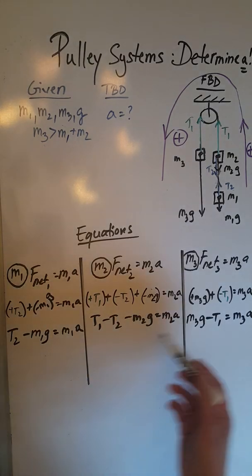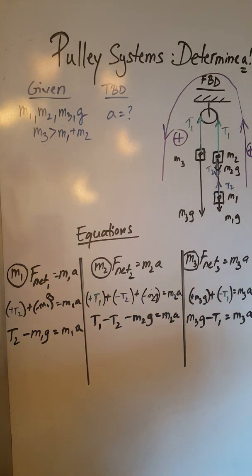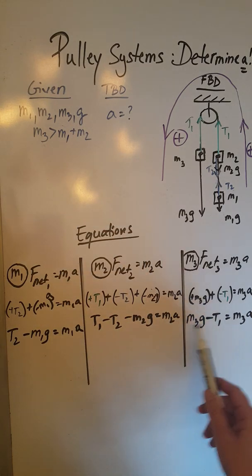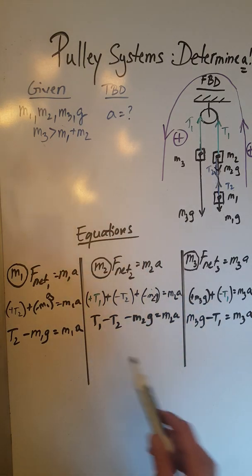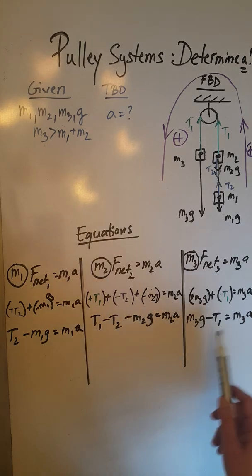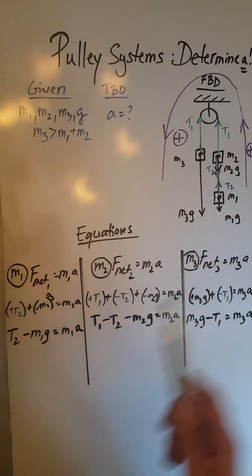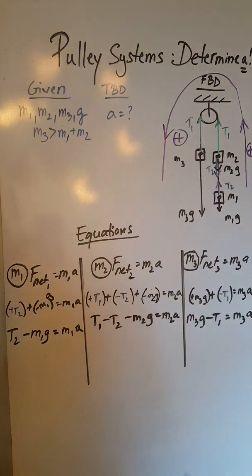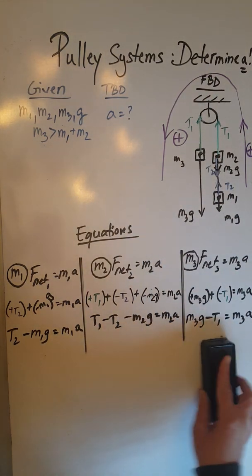Now when we look at these three equations, we realize that the masses are given, so is little g, but we don't know T1 and T2 and we don't know the acceleration. However, we don't need T1 and T2—we only need the acceleration—so we would like to eliminate T1 and T2.